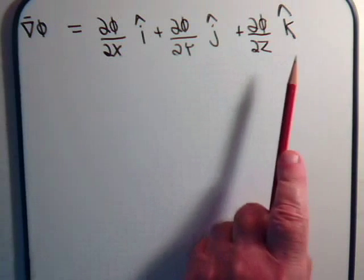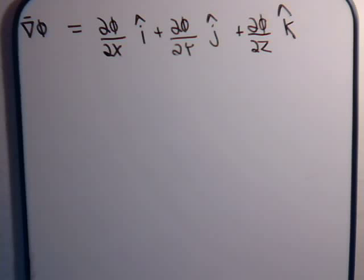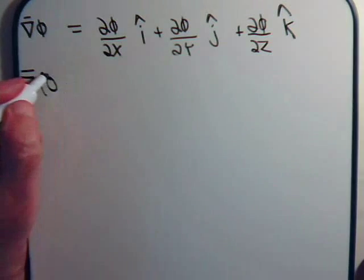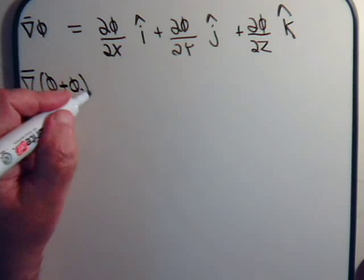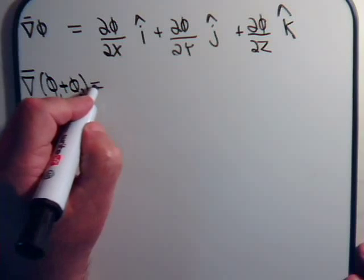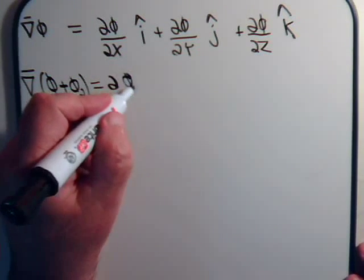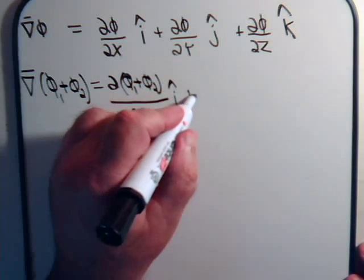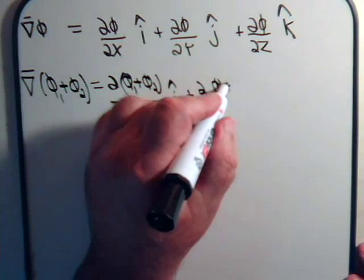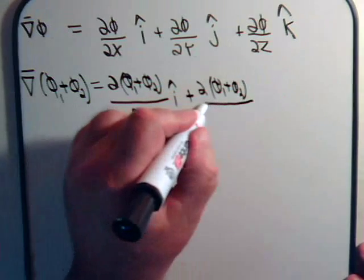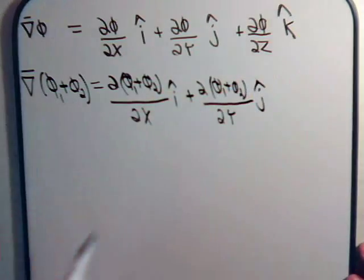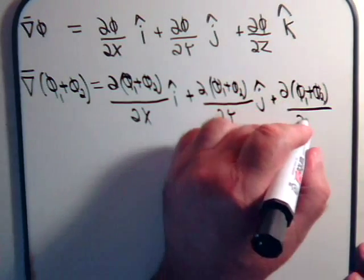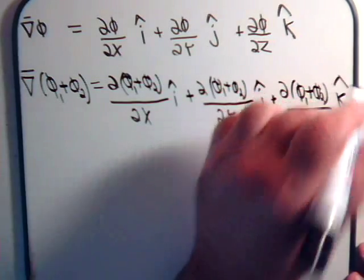This is our basic operation. If we had two scalar functions that we were adding together, by definition this would be equal to the partial of that sum with respect to x times i, plus the partial of that same sum with respect to y times the unit j vector, and the partial of that same sum with respect to z — that would be the k component of the gradient vector.